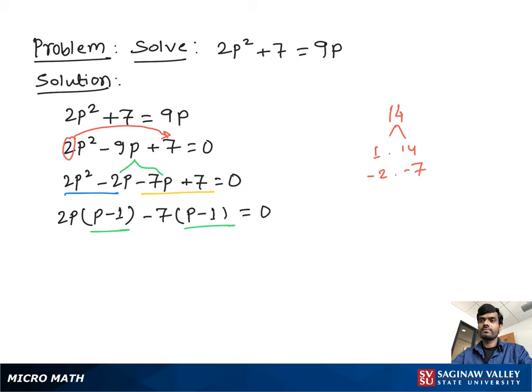From both sides, we take out p minus 1 as a common. We have 2p minus 7, all these terms equal to 0. Now multiplying these two terms gives us 0, so we set each term equal to 0. So p minus 1 equal to 0.